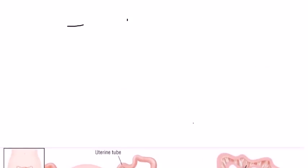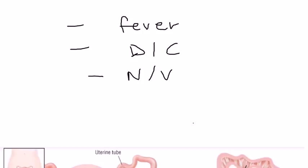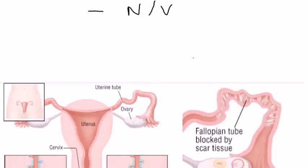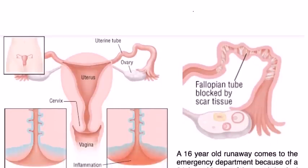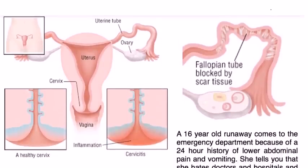Cervical motion tenderness means that during physical exam, when you insert a finger and move the cervix, that can cause pain. Other symptoms include fever, vaginal discharge — a yellow-green discharge — and a woman can also present with nausea and vomiting. One important thing to mention is that PID can sometimes lead to scarring inside the fallopian tube.